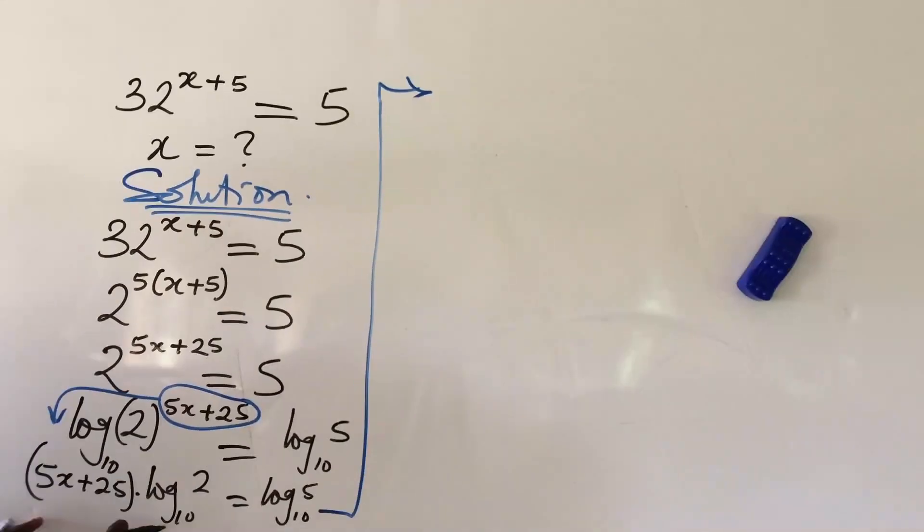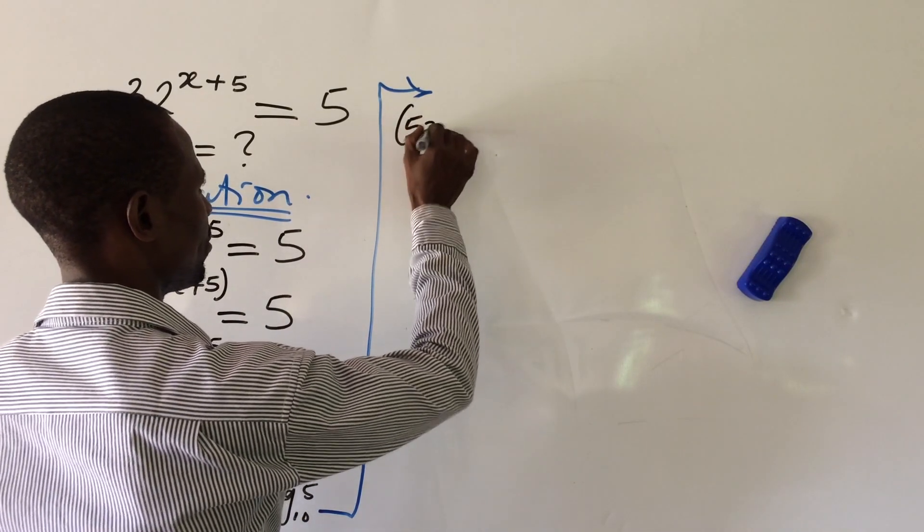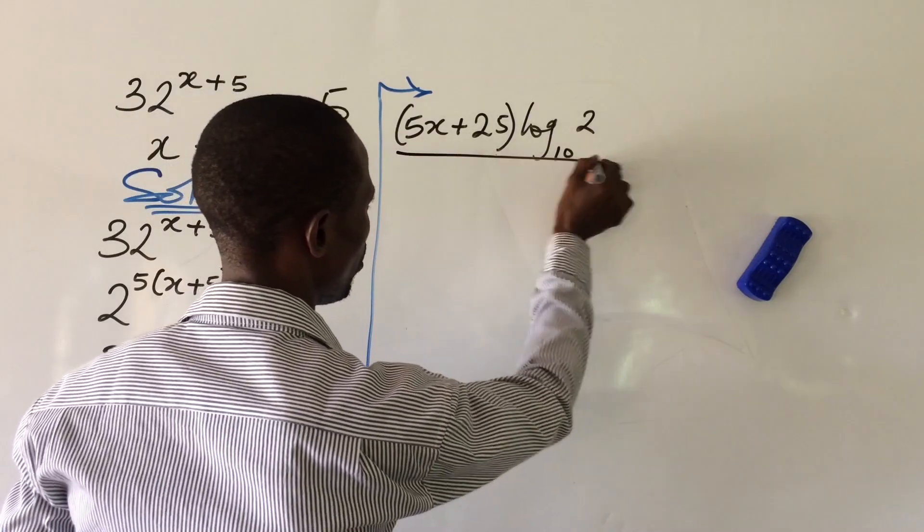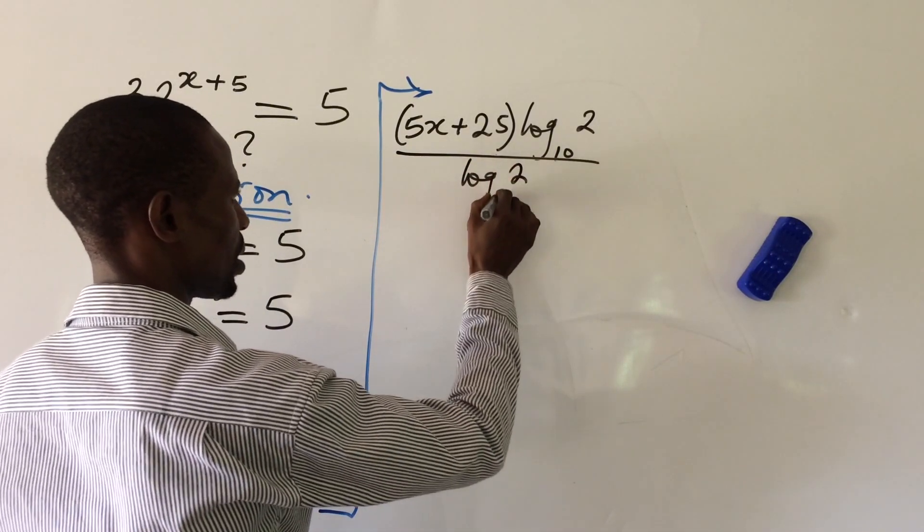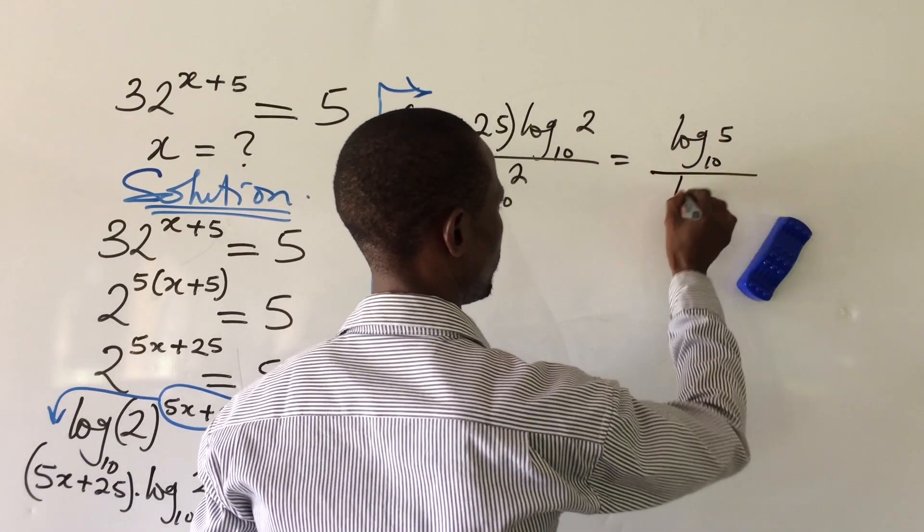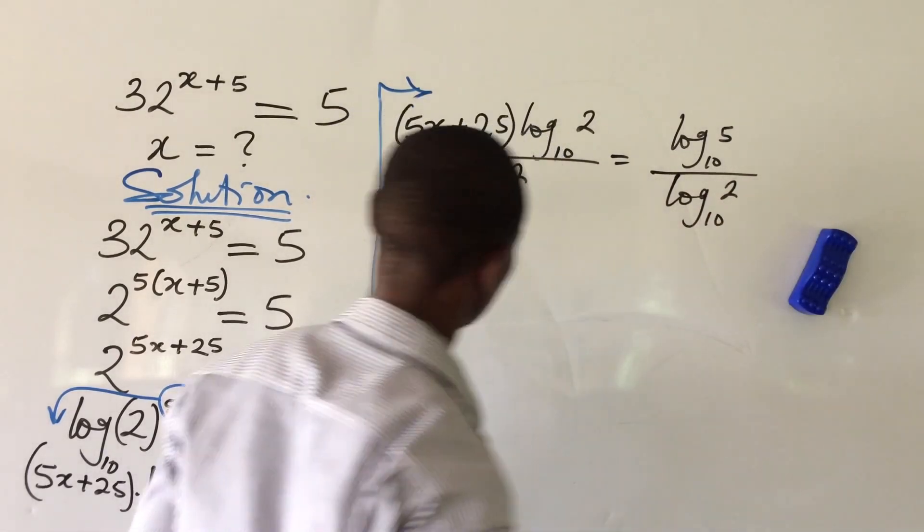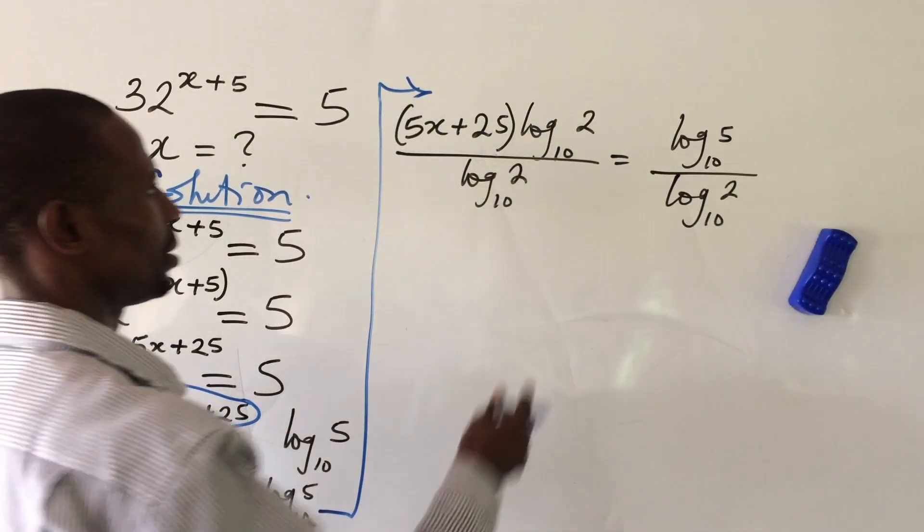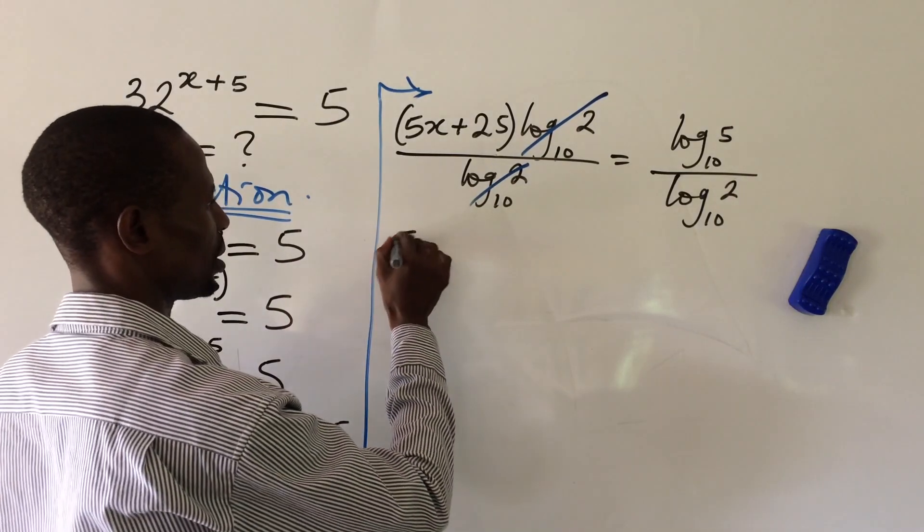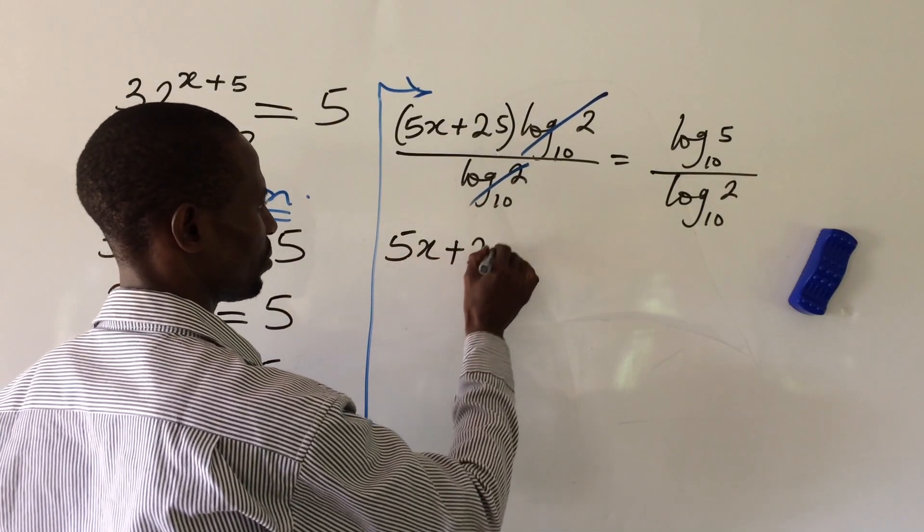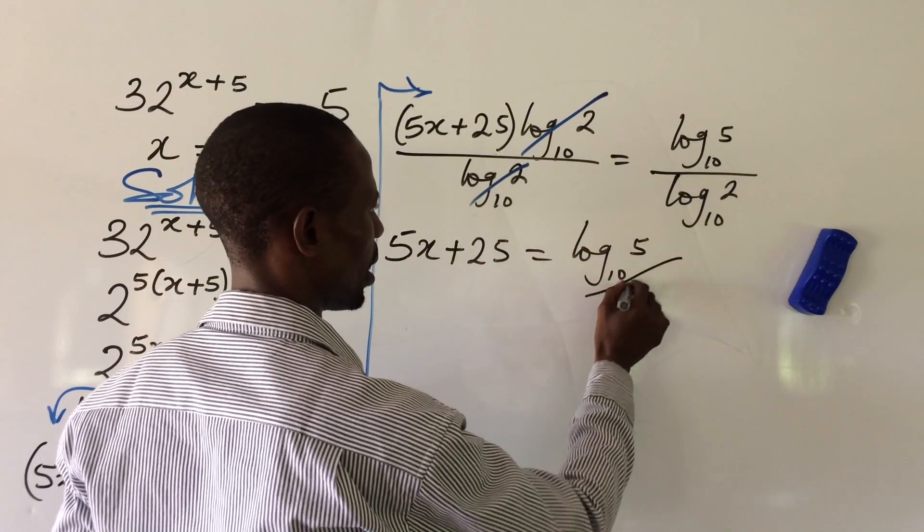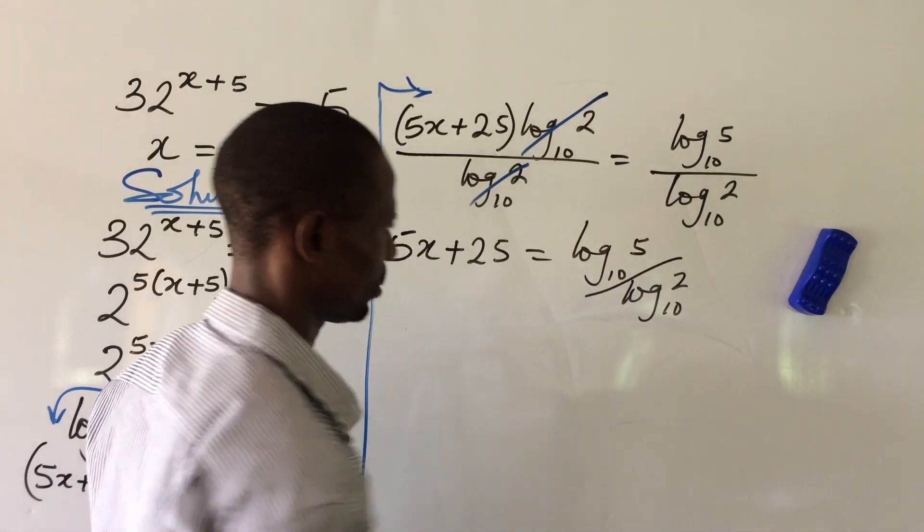Okay. So let's continue on this side of the board. So we have from here, we're going to have this to be the bracket 5x plus 25 bracket log 2 base 10 all over log 2 base 10 equal to log 5 base 10 all over log 2 base 10. Okay. Now because we're having log 2 base 10 here and here, so two of them will leave the system. And so here on the left hand side, we're left with 5x plus 25.